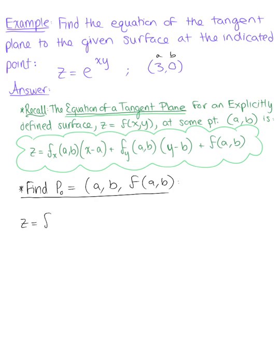So we can say z is defined as f of 3, 0. And substituting this into our given function, we have the natural exponential raised to the 0 which is 1.